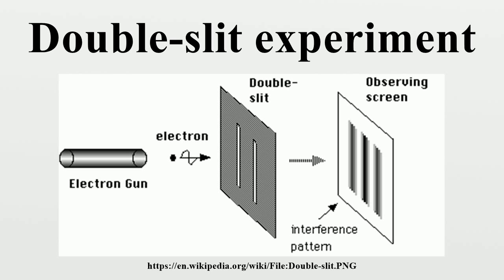The experiment belongs to a general class of double-path experiments, in which a wave is split into two separate waves that later combine into a single wave. Changes in the path lengths of both waves result in a phase shift, creating an interference pattern. Another version is the Mach-Zehnder interferometer, which splits the beam with a mirror.